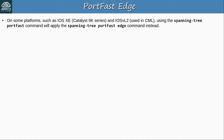Now let's look at PortFast Edge, which is just PortFast with a different name. On some platforms such as IOS XE — used by the Catalyst 9K series — and also IOS XL2 used in CML, using the 'spanning-tree portfast' command will apply 'spanning-tree portfast edge' instead. On SW1, which is an IOS XL2 switch running in CML, issuing 'spanning-tree portfast' converts it to 'spanning-tree portfast edge' in the running config.